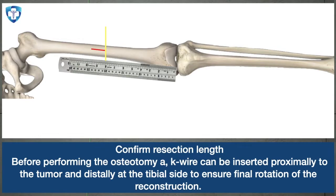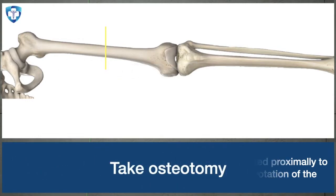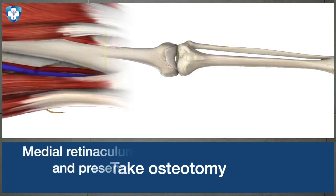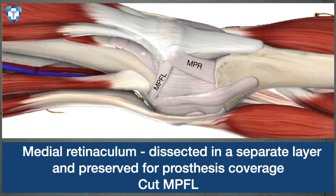Alternatively, we can place K-wires proximally in the femur and tibia at the same level to avoid confusion in rotational alignment. We then take the osteotomy. After the osteotomy is taken, we come to the knee and perform the arthrotomy, identifying the relevant structures.